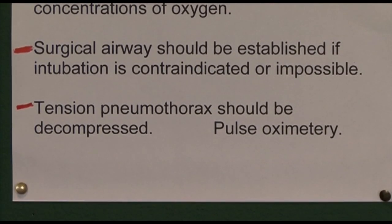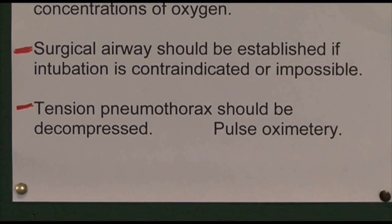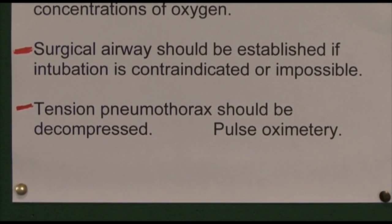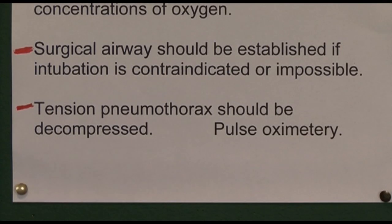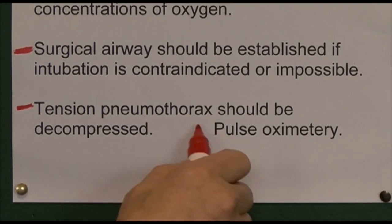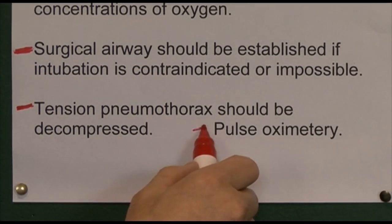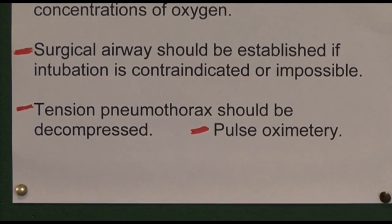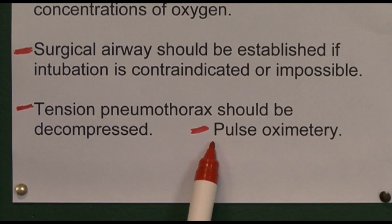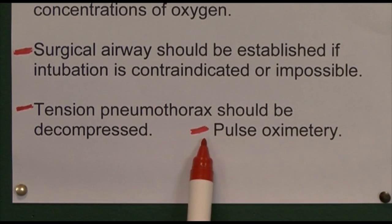Decompressing a tension pneumothorax will probably involve using a wide-bore cannula in the mid-clavicular line, inserted at about the third intercostal space. It's always worth using pulse oximetry to help monitor blood oxygen levels quickly.